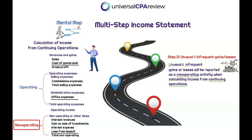Income from continuing operations is the first bottom-line income item we calculate. It's separate from income from discontinued operations, which we'll discuss later. Within income from continuing operations, we have both the operating section and the non-operating section. If you see transactions described as infrequent in occurrence or unusual in nature, they're always presented within the non-operating section as a component of income from continuing operations.